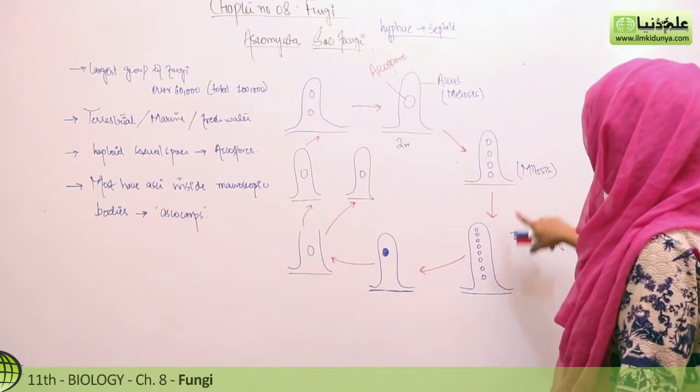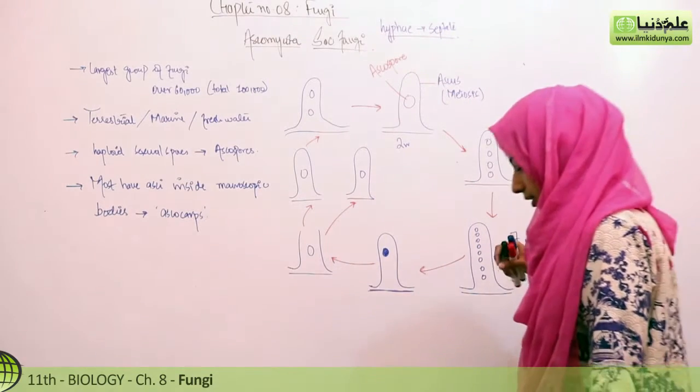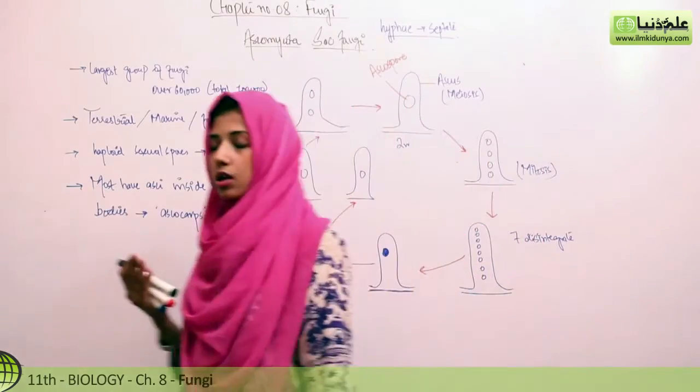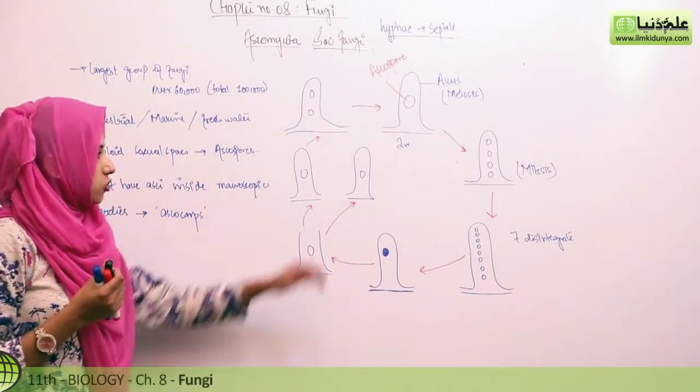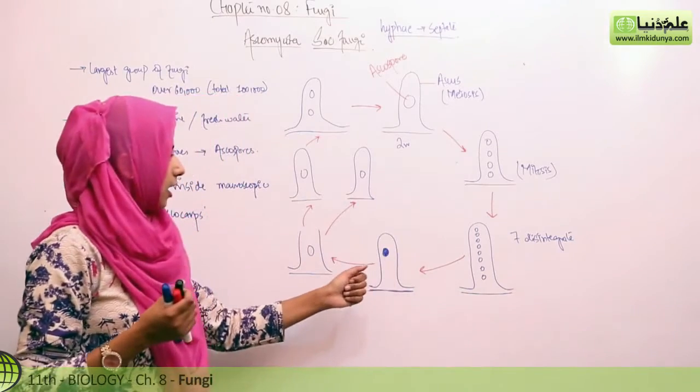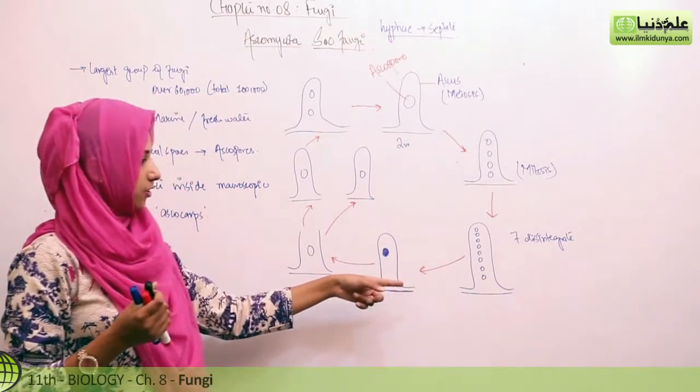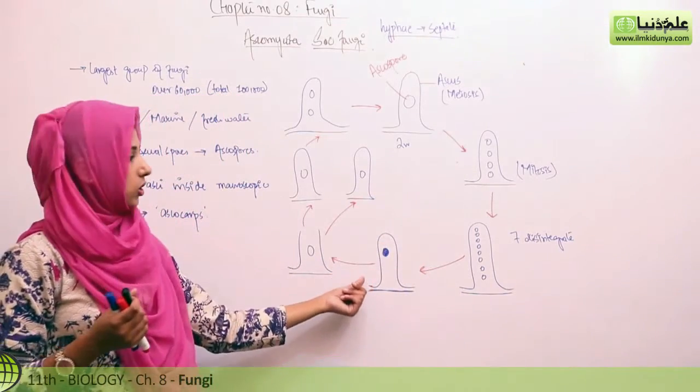The 4 spores undergo mitosis and reproduce to form 8 spores. Out of these 8 spores, 7 will disintegrate and only 1 will be functional.